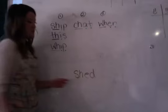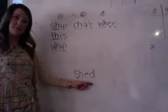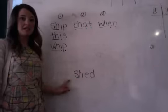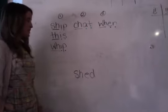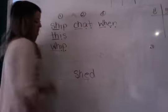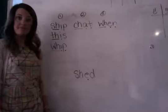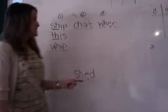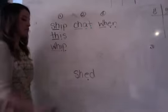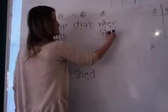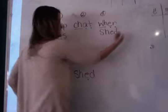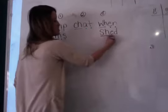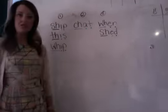This is the word shed. Say shed. Now let's say the sounds for shed: Sh, E, D — shed. What does this one letter say? E — very good, just like in when. Say and write shed under column three: Sh, E, D — shed. Now let's dot and dash: Sh, E, D — shed.